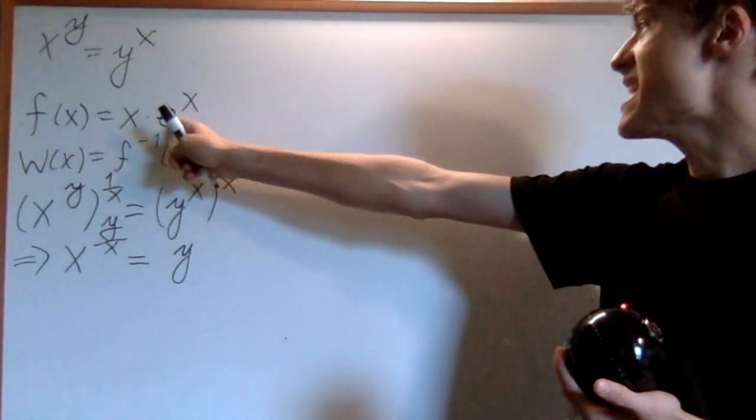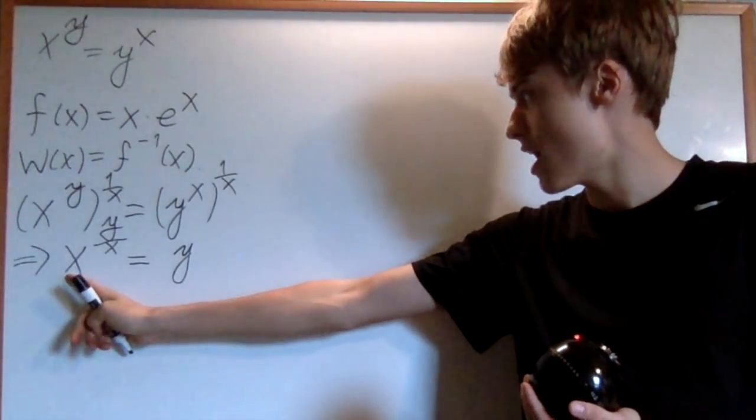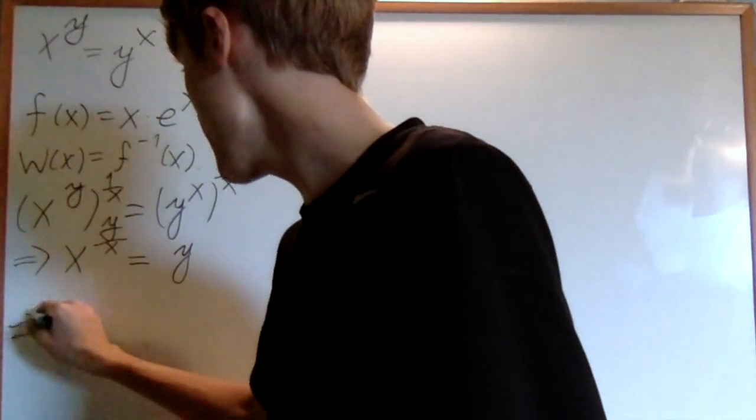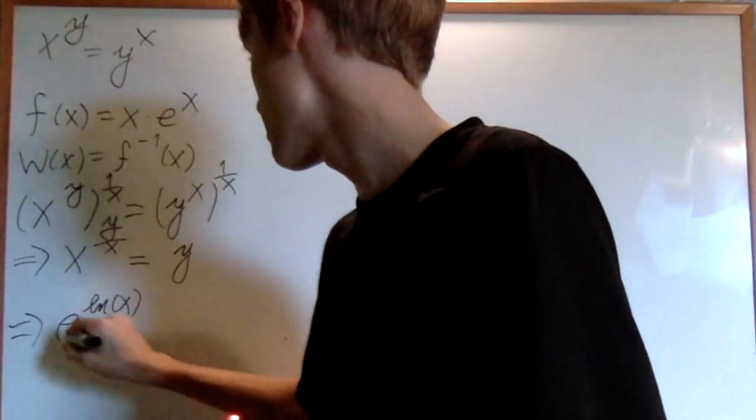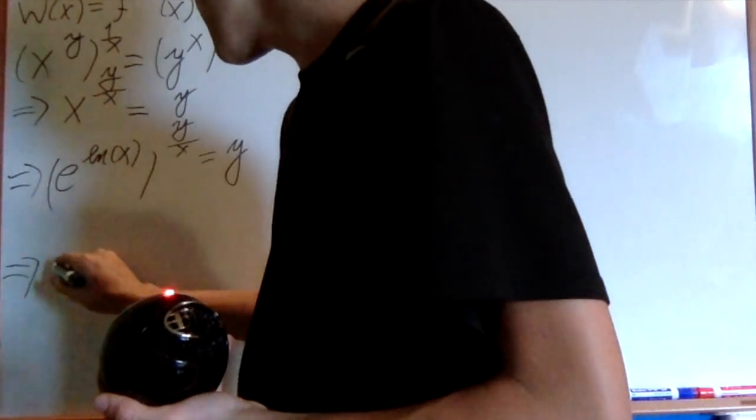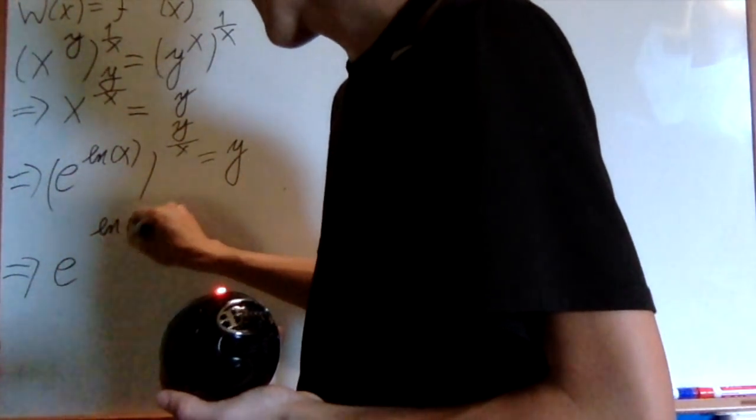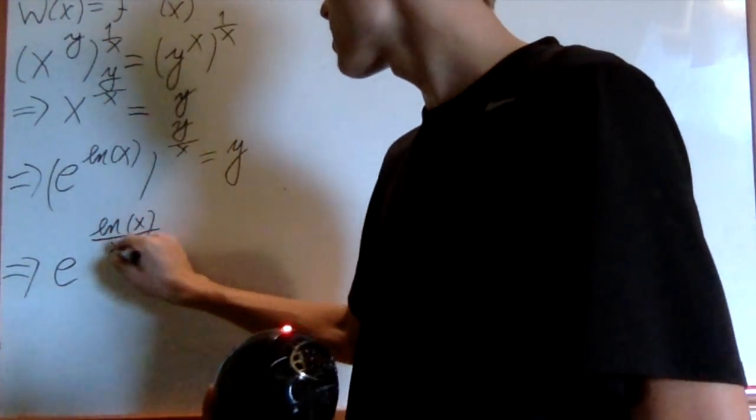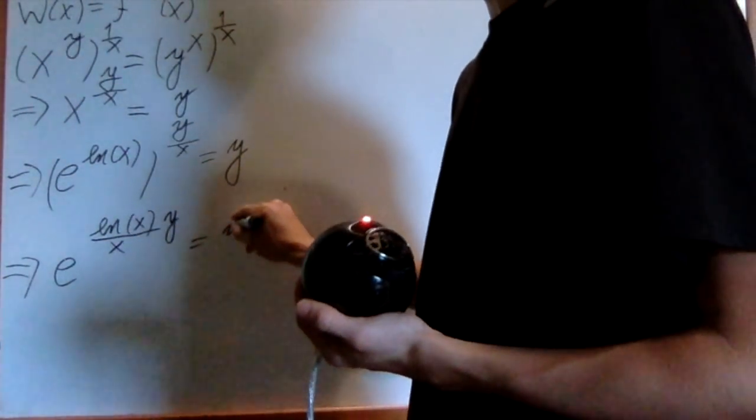Now, you see we have an e here. We're using the exponential function. So let's get an e on this side. So what I'll do is actually replace x with e to the natural log of x instead. Well, that means that I have e to the natural log of x. Now I'm going to do over x and then multiply it by y. And you'll see y in a second. And then this is equal to y.